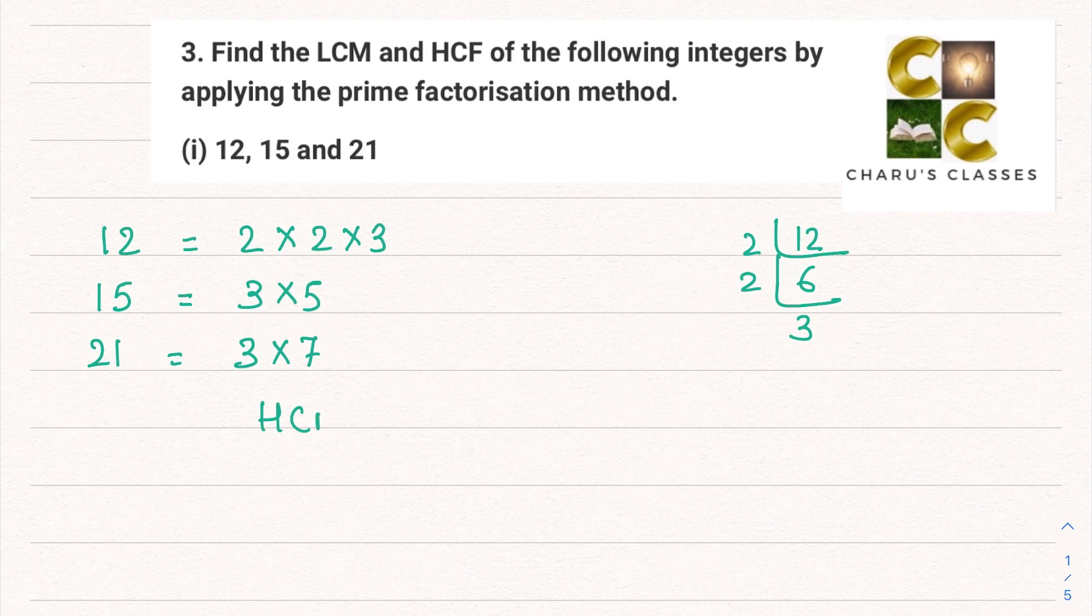To find HCF, we will check these numbers for common factors. One such number which is in all three numbers' factors—in this case there is only 3 which is common in these three factors. So our HCF will be 3.